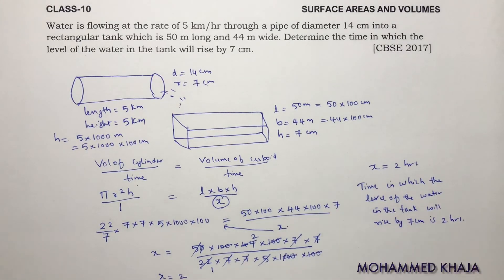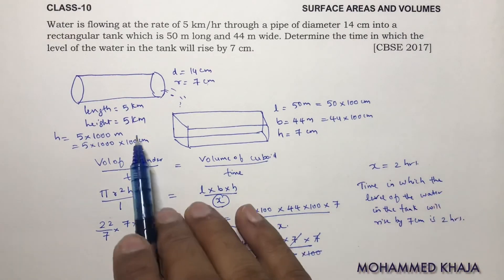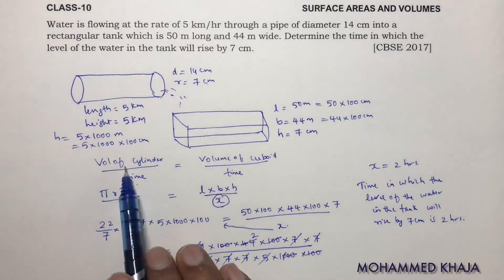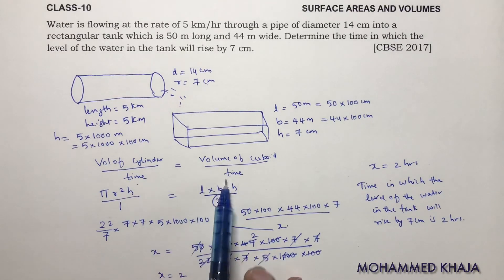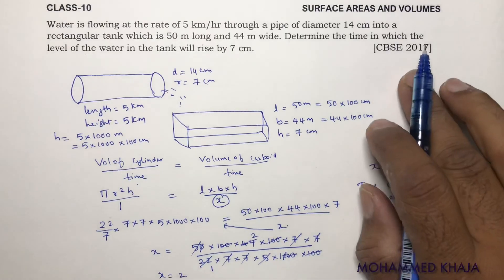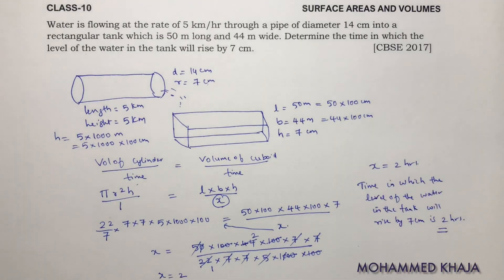So in this way you need to solve the problem. Most of the problems you will observe, whenever there is water flowing from one place to another place, I will solve the problem by taking volume by time equals volume by time. It will be easy to get the answer. So the answer here is 2 hours.